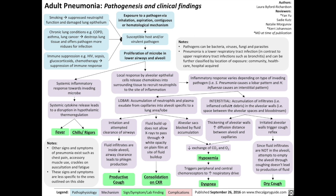With interstitial pneumonia, this type involves the accumulation of infiltrates — such as inflamed cellular debris — in the alveolar walls, or the spaces between the alveoli and the bloodstream. The accumulation of infiltrates in the interstitial tissue thickens the alveolar walls and increases the diffusion distance for gases between the alveoli and the capillaries. That also results in reduced exchange of CO2 and oxygen, causing hypoxemia and hypercarbia, and triggering peripheral and central chemoreceptors to increase respiratory drive, resulting in dyspnea.